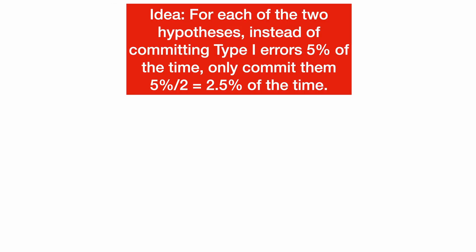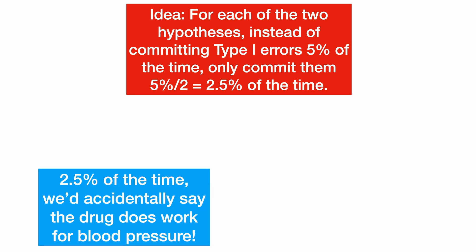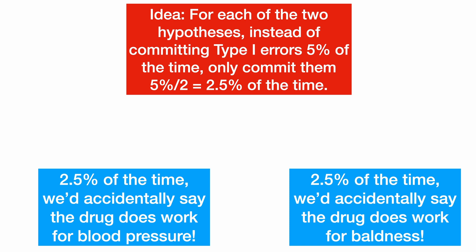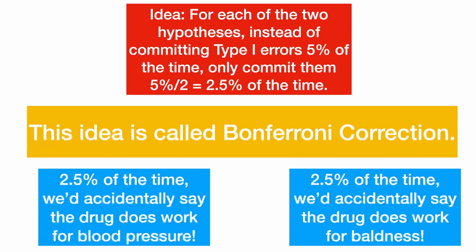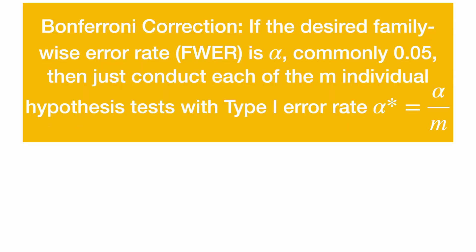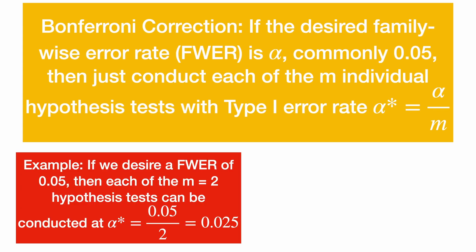Here's an idea. What if for each of the two hypotheses, instead of committing type 1 errors 5% of the time, we only commit them 2.5% of the time — that's 5% divided by 2. So 2.5% of the time we'd accidentally say the drug works for blood pressure, and 2.5% of the time we'd accidentally say the drug works for baldness. Then the family-wise error rate would be between 2.5% and 5%, which is less than 5%. This idea is called Bonferroni correction: if the desired family-wise error rate is alpha, conduct each of the M individual hypothesis tests with type 1 error rate alpha star equal to alpha over M. If we desired a family-wise error rate of 0.05, then for each of the M equals 2 hypothesis tests, they could be conducted at alpha star of 0.025.